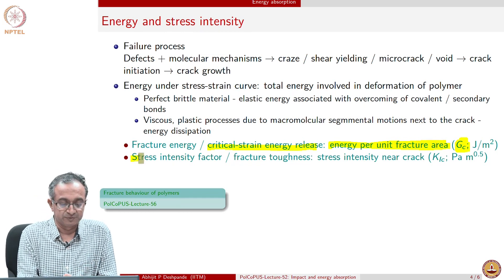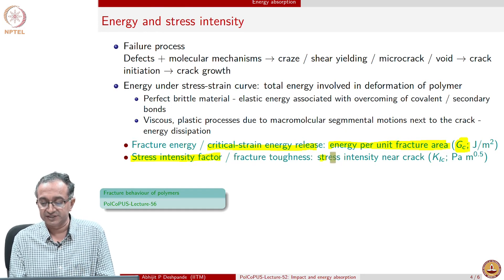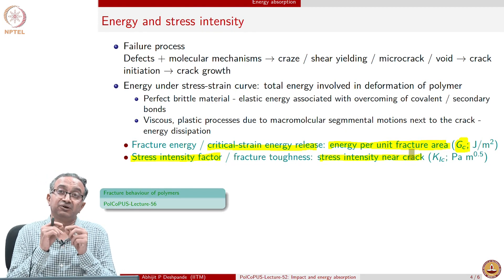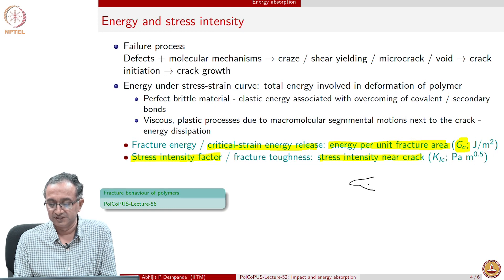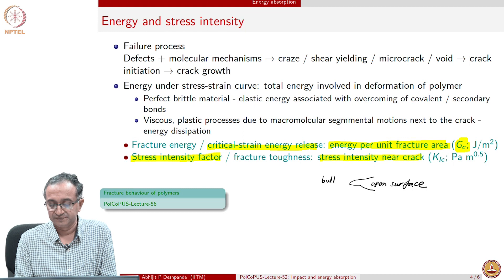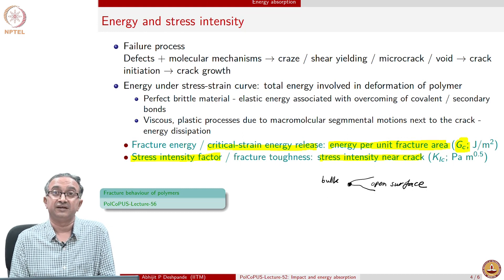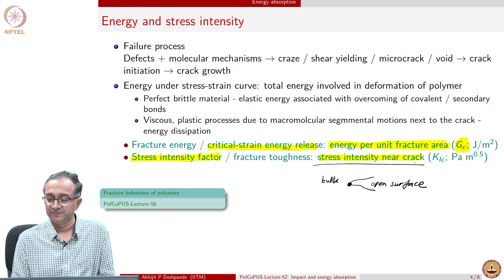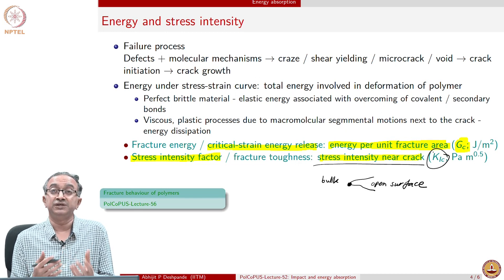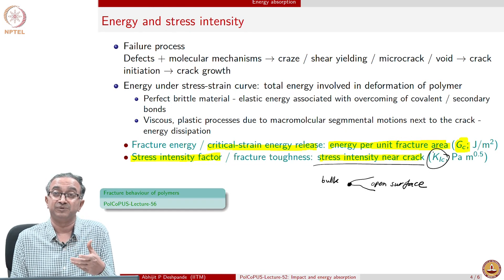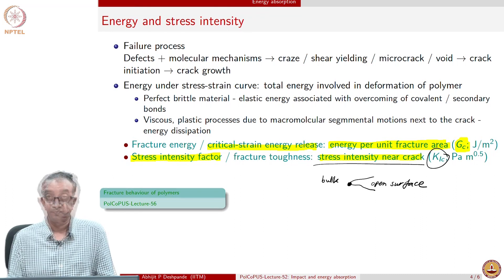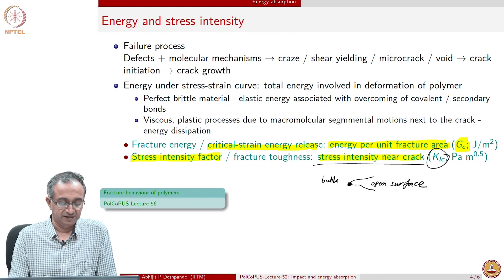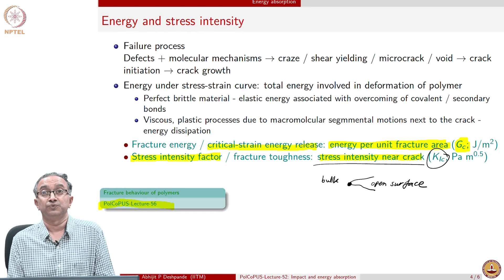Another way to analyze fracture is the stress intensity factor, which quantifies the stress intensity near a crack. Near a crack there is a singularity — one phase on one side, bulk material on the other. At the crack tip, stresses get intensified, and that is quantified using the factor KIC. Using both G and KIC, we can look at fracture phenomena: what happens when a crack is present, how it grows, and what energy is required for crack growth. These concepts will be discussed in a subsequent lecture on fracture behavior of polymers.